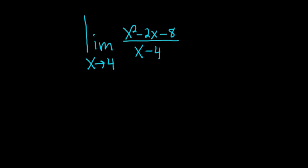So if you plug in 4 right away, let's see what happens. We would get 4 squared minus 2 times 4 minus 8 over 4 minus 4 on the bottom, putting a 4 where all the x's are.